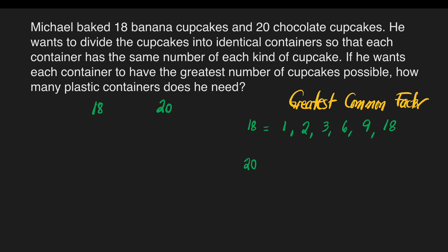1 is a factor because 1 times 18 is 18, or 18 divided by 1 is 18 — it can give you a whole number when you divide it. And for 20, what are the factors of 20? We have 1, 2, 4, 5, 10, and 20.